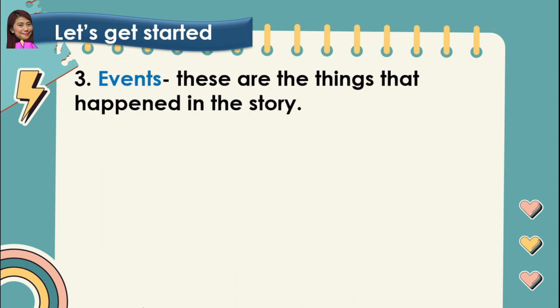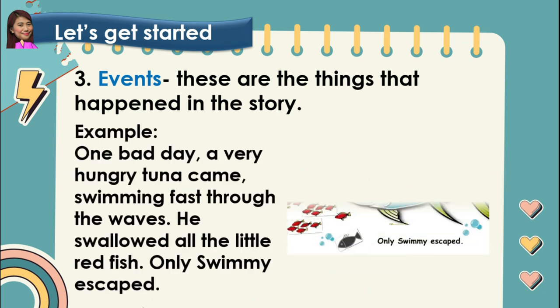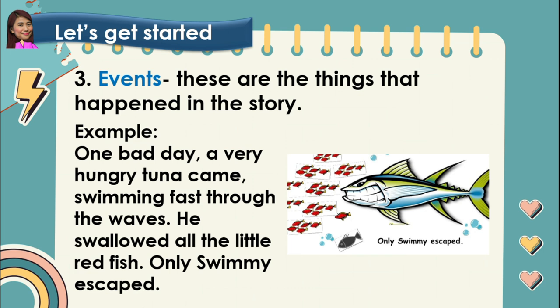Number three is the events. These are the things that happened in the story. For an example, in the story Swimmy, this is one of the events: one bad day, a very hungry tuna came swimming fast through the waves. He swallowed all the little red fish. Only Swimmy escaped.